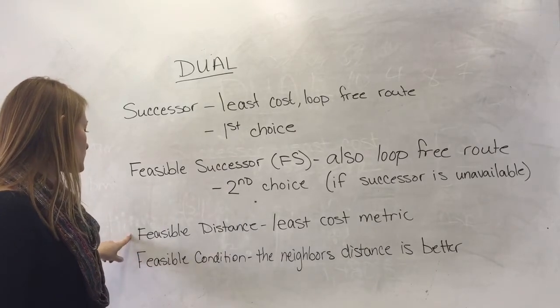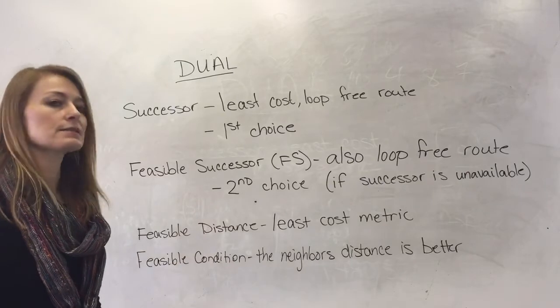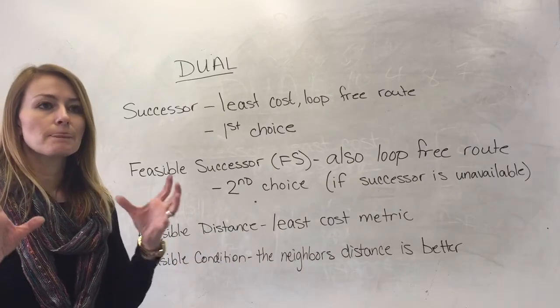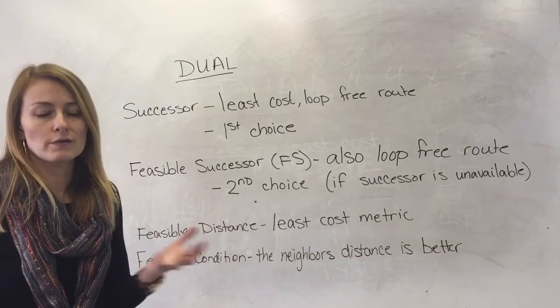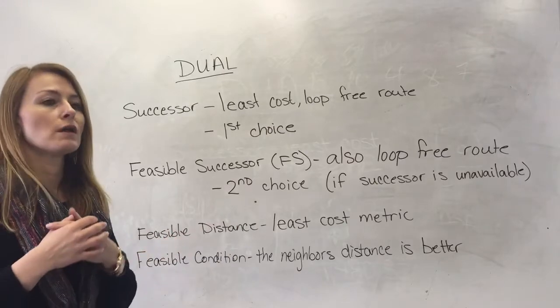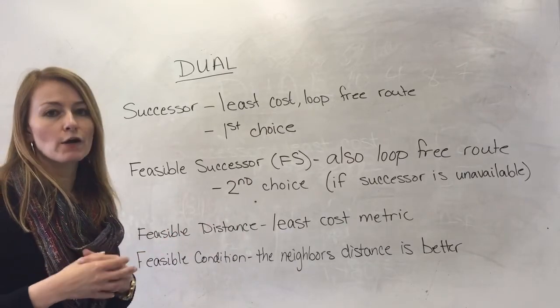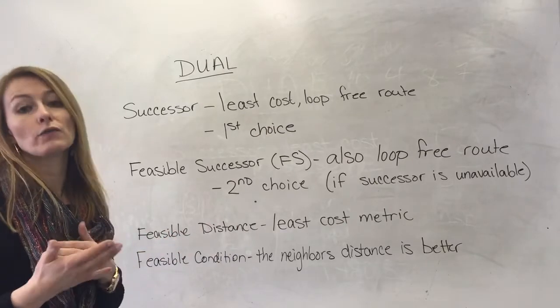Another term that DUAL uses is feasible distance. Feasible distance is the metric, that least cost metric - the value associated with the route that you're taking.